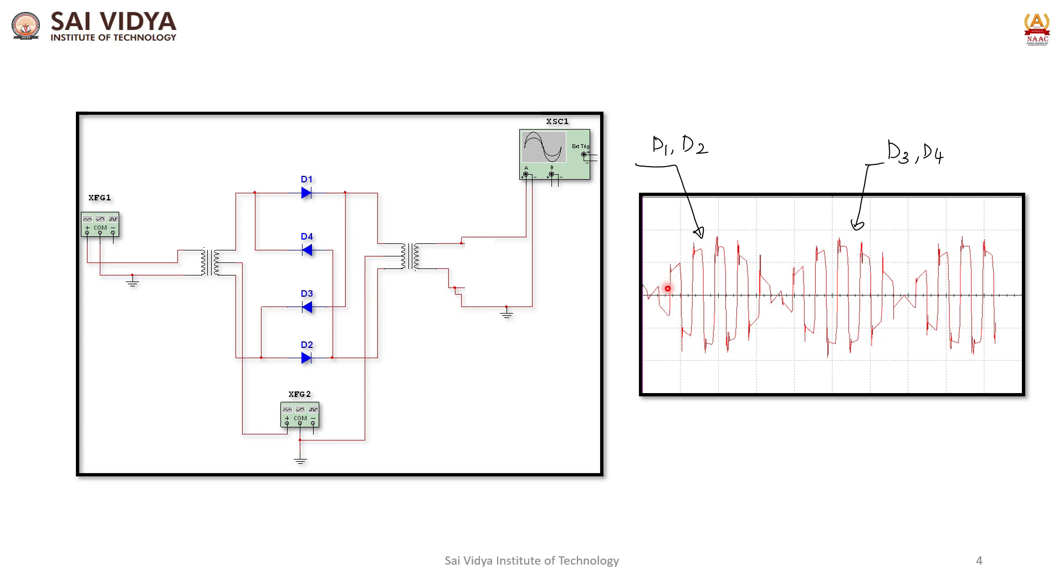During positive half cycle, the envelope is conducted by diode D1 and D2, and during negative half cycle, because of the phase reversal, diode D3 and D4 envelope is shown inverted.